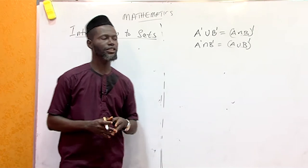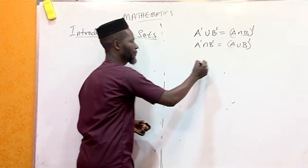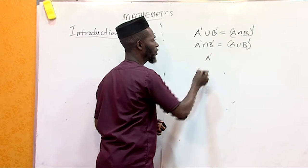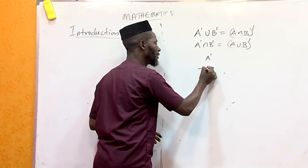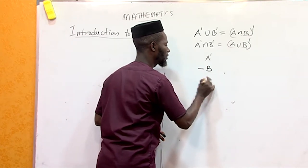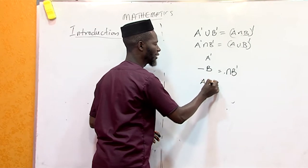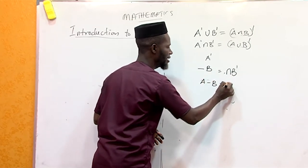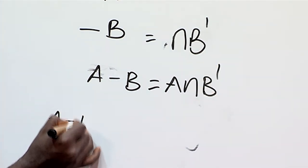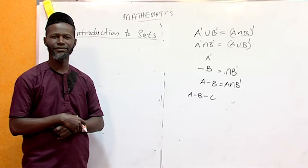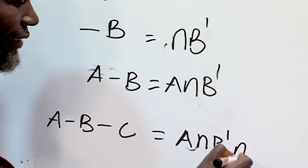Another topic is the complement, also called prime. A complement is the same as A prime — either notation is acceptable. Also, if you are given A minus B, this simplifies to A ∩ B'. So A minus B equals A intersection B complement. And if you are given A minus B minus C, your answer will be A ∩ B' ∩ C'.